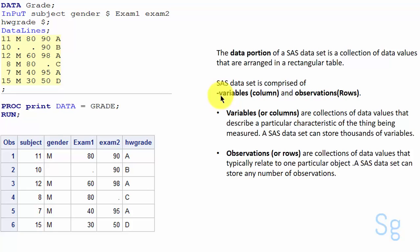SAS data set is comprised of variables that is columns and observations that is rows. Variables are collections of data values that describe a particular characteristic of the thing being measured. A SAS data set can store thousands of variables. Observations are collections of data values that typically relate to one particular object. A SAS data set can store any number of observations.